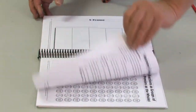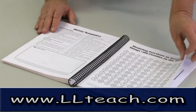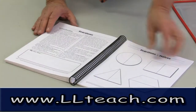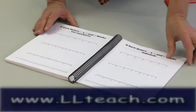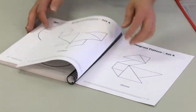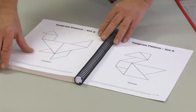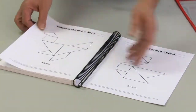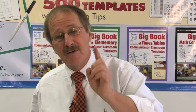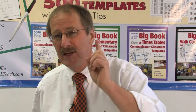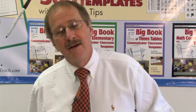For math, we have ten frames, many different kinds of things with money and time, and we also have a set of tangrams where kids can cut these out and make puzzles. Realize that these templates are unlike other template books on the market because we include instructions — instructions from teachers that are in classrooms using this every single day.